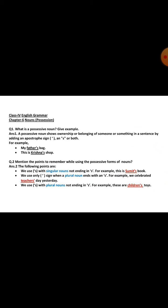You all know how an apostrophe sign looks. For example, 'my father's bag.' In this sentence, 'father's' is your possessive noun. Why? Because the bag belongs to my father, so it is showing ownership. In the word F-A-T-H-E-R, we are using the apostrophe sign and an S. So 'father's' is your possessive noun here.